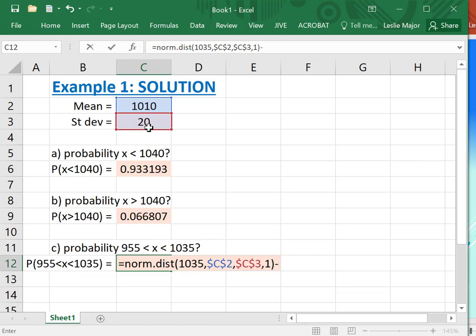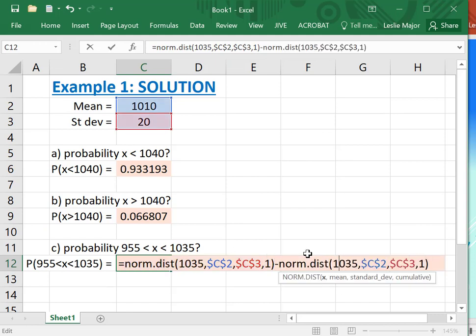So do the norm.dist to the 1035 first, and what I like to do is I just copy Control-C, Control-V that, and then just change the second value to 955. And then here we are.